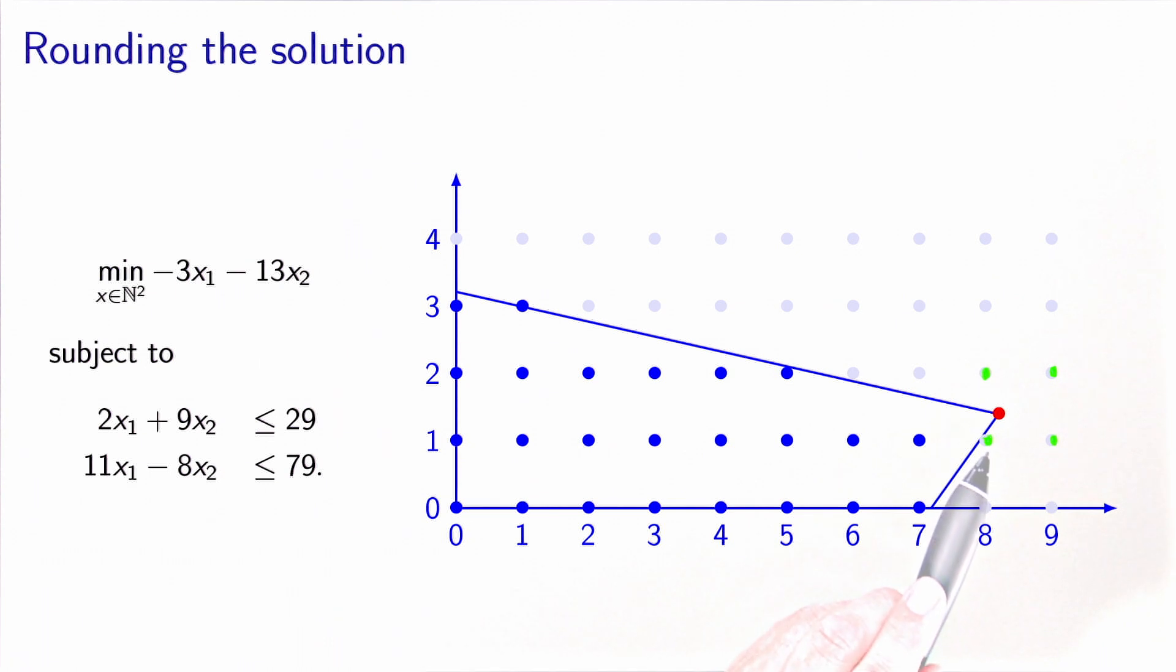So this one is obtained by rounding both variables down. This one is obtained by rounding both variables up. And these two are obtained by rounding one of the two variables up and the other one down. What we see in this example is that none of these possibilities actually verifies the constraints. They are all infeasible. So it doesn't work. I cannot round the solution because I would generate a solution which is infeasible.